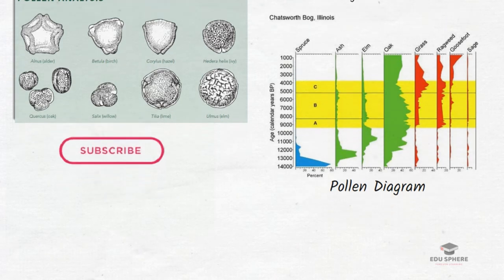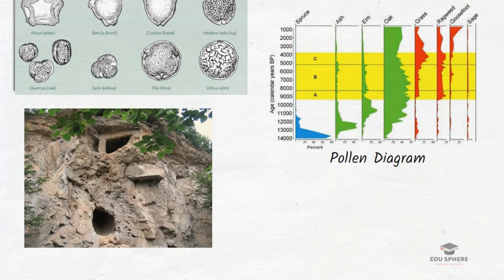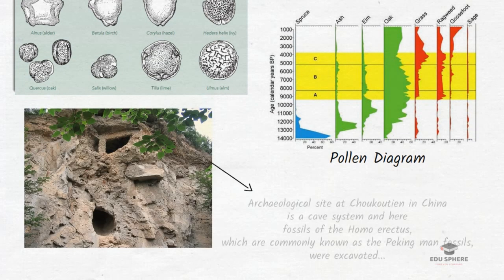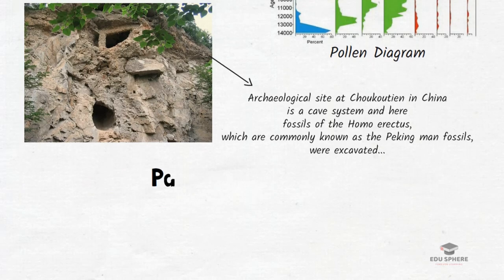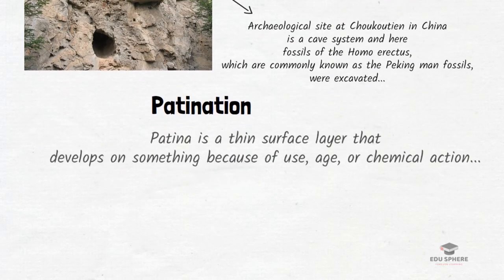A very good example of the application of the pollen method is the archaeological site at Zhoukoudian in China. This is a cave system where fossils of Homo erectus, commonly known as Peking Man fossils, were excavated.